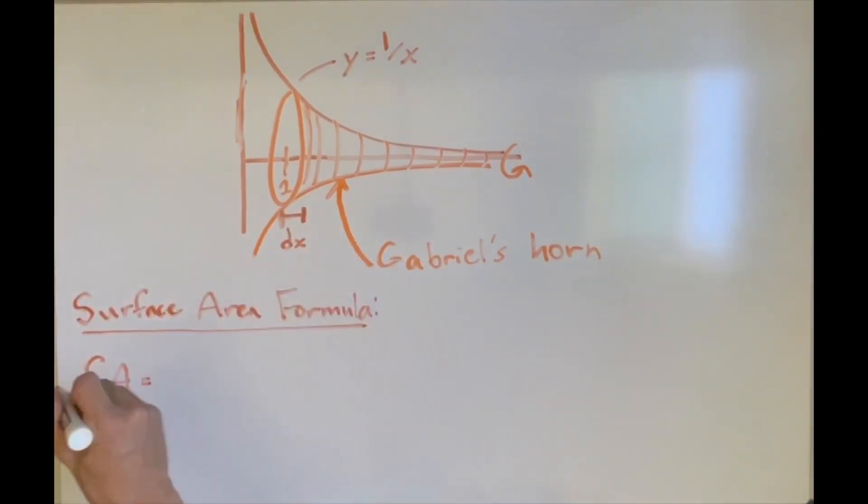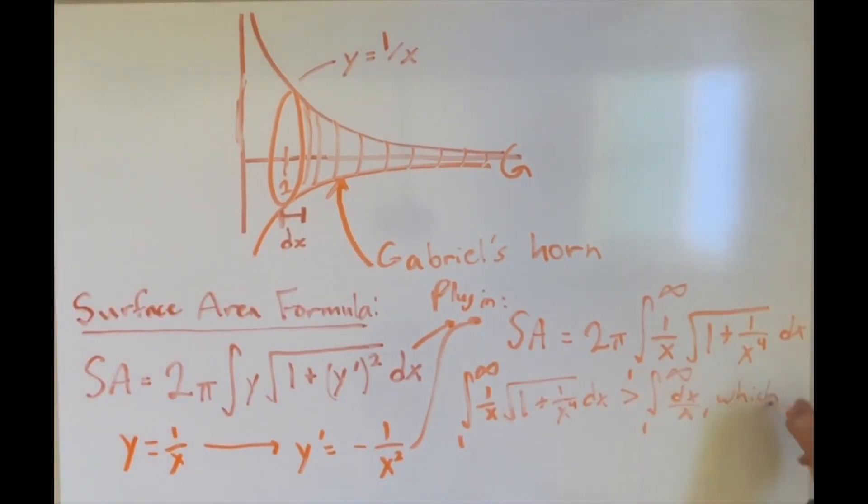Oh, and side note, if you do the math to find the outer surface area of Gabriel's horn, you can actually find that the surface area is infinite, meaning you can never completely paint over it, which is known as the painter's paradox. But, in my opinion, I still think it's cooler that I can completely fill this horn with pi.